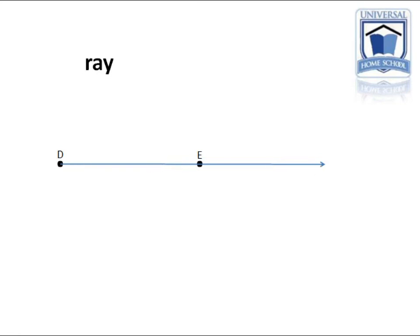To name this line it would be D, E pointing in the direction of the right. D and the arrow has gone through the E to the right.